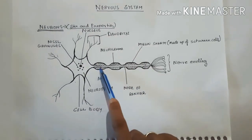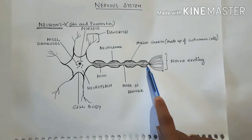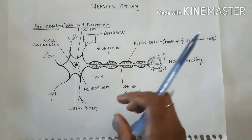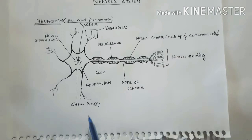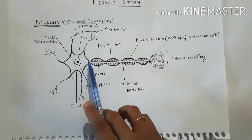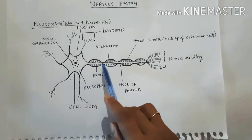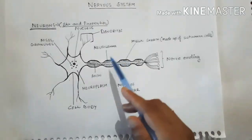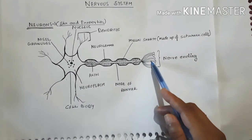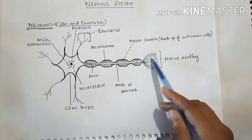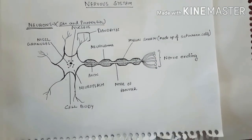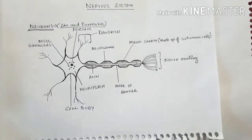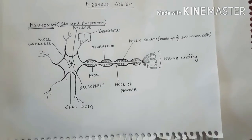The third part of the neuron is the axon. The axon is a single, long, cylindrical process of uniform diameter arising from the cell body. It is covered with a membrane called the neurolema. The terminal end of the axon is branched, and at the last end there is a knob-like structure. So we can say that axon ends have a knob-like terminal.